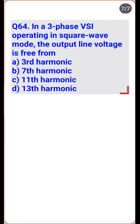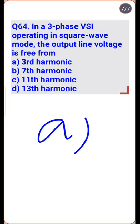The line voltage is the difference of two phase voltages; the third harmonic gets cancelled out though it is present in the phase voltage — so option A is the right one.